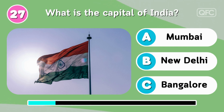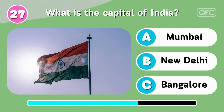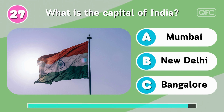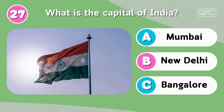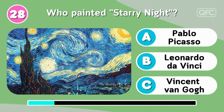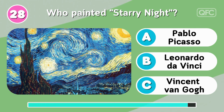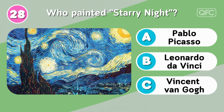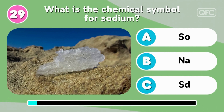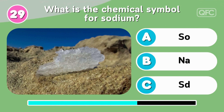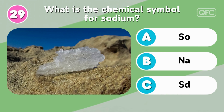What is the capital of India? New Delhi. Who painted Starry Night? Vincent Van Gogh. What is the chemical symbol for sodium? NA.